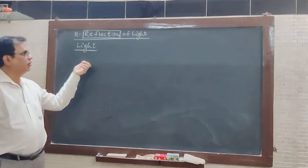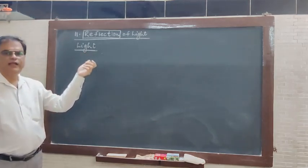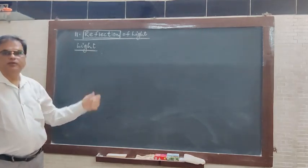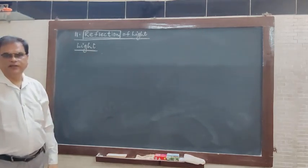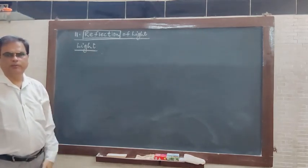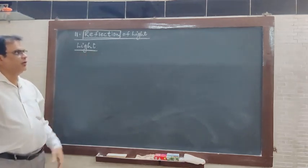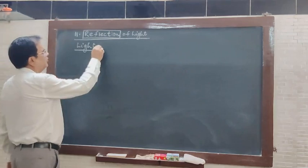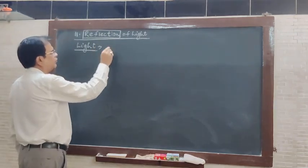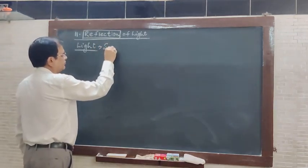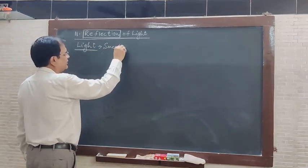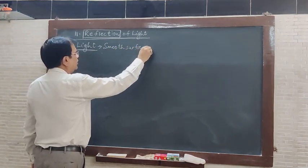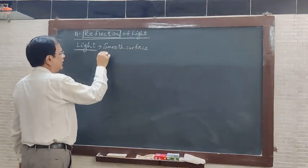To see all the objects in our surroundings, light is the most important medium. Without light, we won't be able to see anything. Now, in 9th and 10th standard, you also did something like: whenever light is reflected from smooth surfaces, you get a regular reflection.